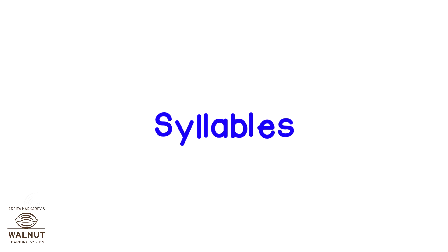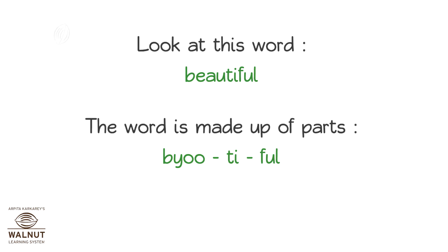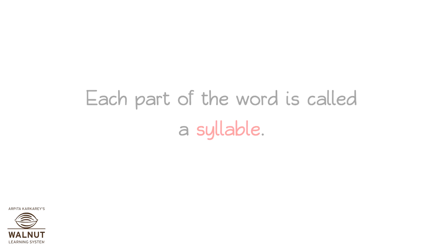First English: Syllables. Look at this word — beautiful. The word is made up of parts. Beautiful. Each part of the word is called a syllable.